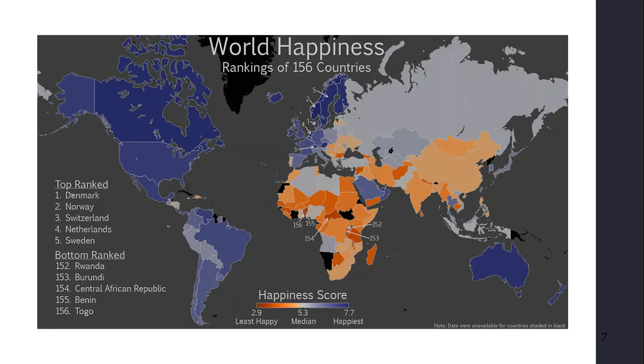This is a world happiness map. It's a ranking of 156 countries based upon a variety of things. And these world happiness things will change depending on who you're talking to. But the happiest countries tend to be in northern Europe, the bottom ranked being places like Rwanda, Burundi, the Central African Republic.